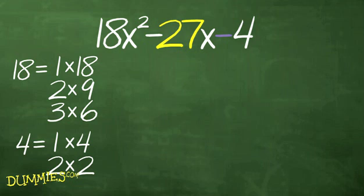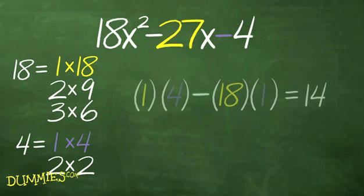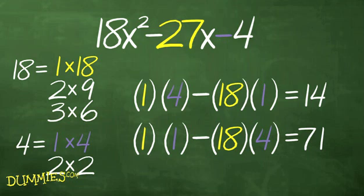Using the 1x18 crossing it with 1x4 gives you a difference of either 14 using the 1x4 and 18x1, or 71 using the 1x1 and the 18x4.